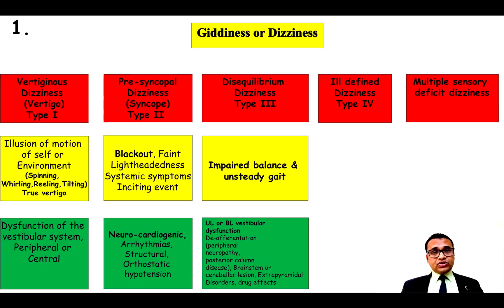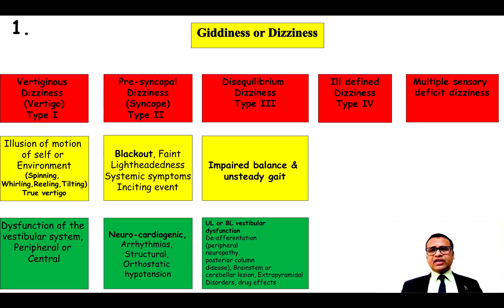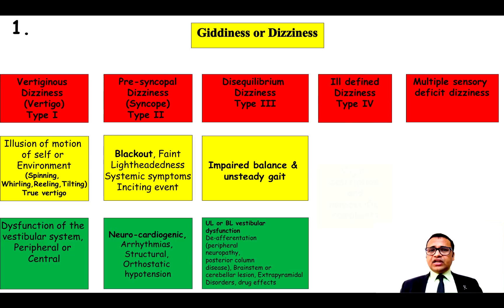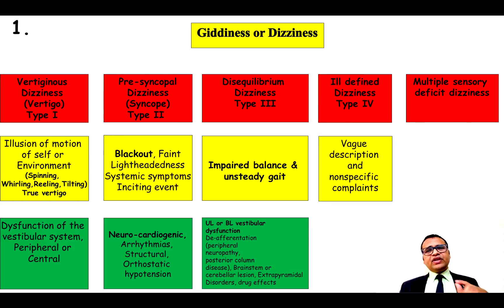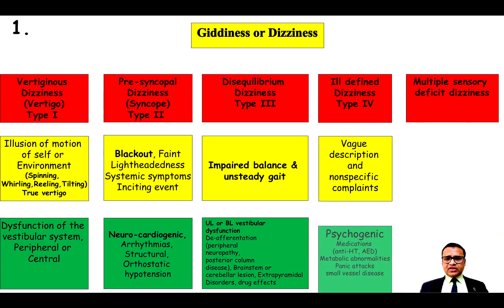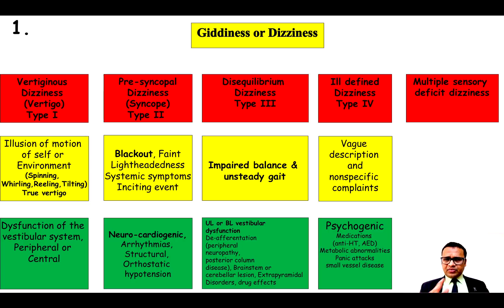This type of dizziness can also occur in patients with brainstem or cerebral lesions. Patients with extrapyramidal disorders can also have balance problems. Some drugs such as anti-epileptic drugs can also cause imbalance of gait. Coming to Type 4 dizziness — ill-defined dizziness — in which the patient gives vague and non-specific complaints. The most common cause is functional or psychogenic dizziness, and there are psychiatric illnesses which can also lead to dizziness.